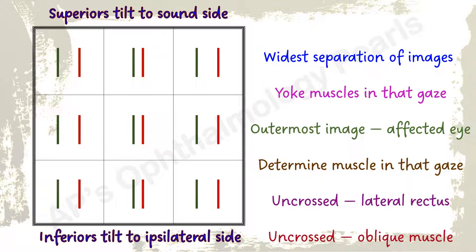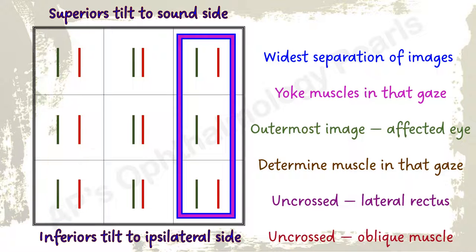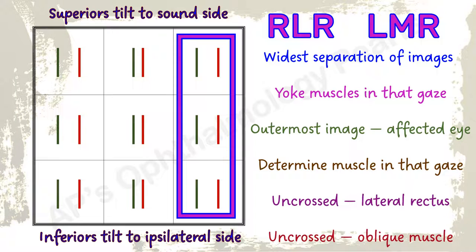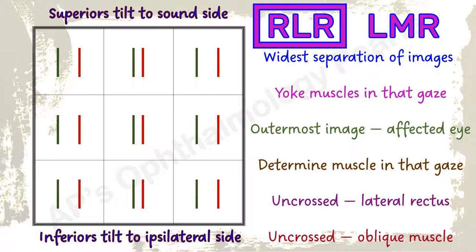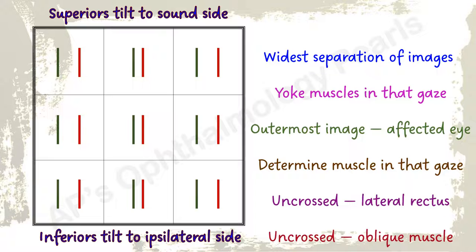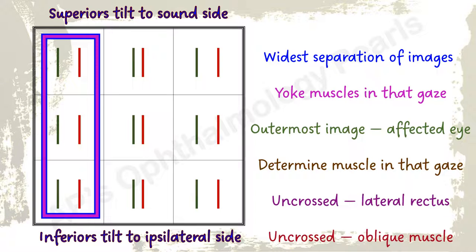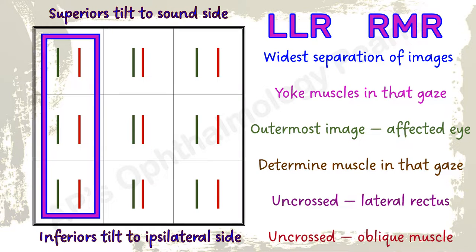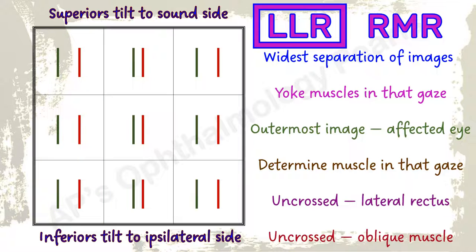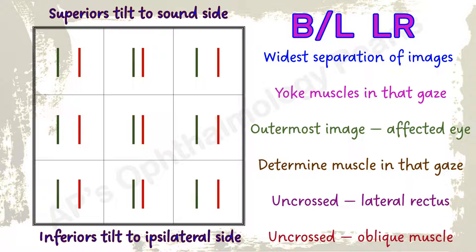Here, there is no vertical separation of images. Maximum separation of images is in all the right and left fields of gaze, with no single field having the maximum. The yoke muscles acting in the right fields of gaze are the right lateral rectus and the left medial rectus. Red is the outermost image, so the right eye is involved — this is a right lateral rectus palsy. This is an uncrossed diplopia, so the lateral rectus checks out. At the same time, there is horizontal separation in the left fields of gaze. The yoke muscles acting in the left fields are the left lateral rectus and the right medial rectus. Green is the outermost image, so the left eye is involved — this is a left lateral rectus palsy. It's an uncrossed diplopia, so this is a bilateral lateral rectus palsy.